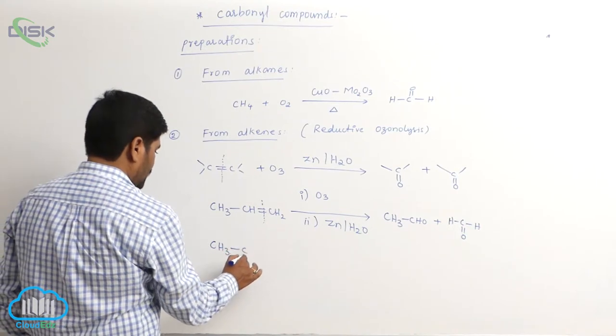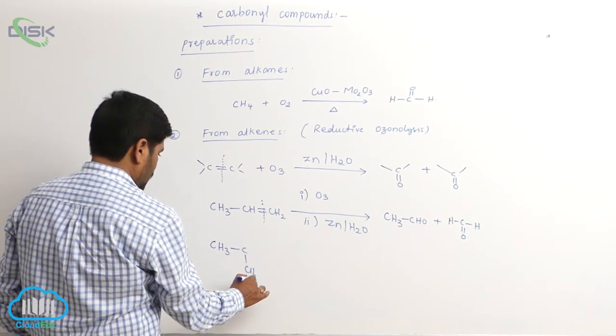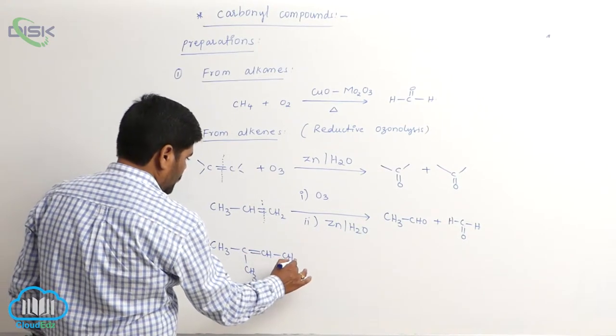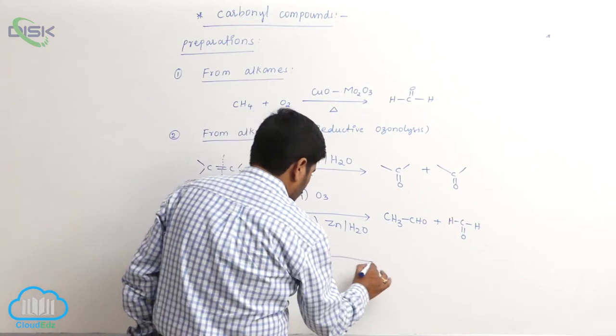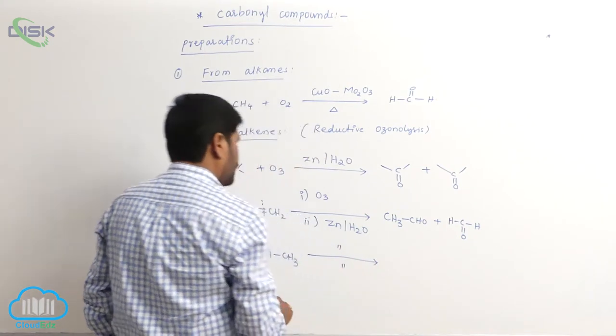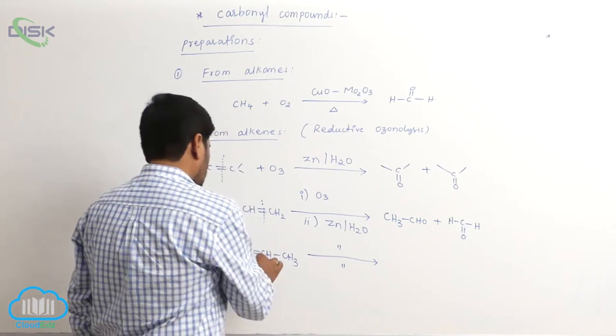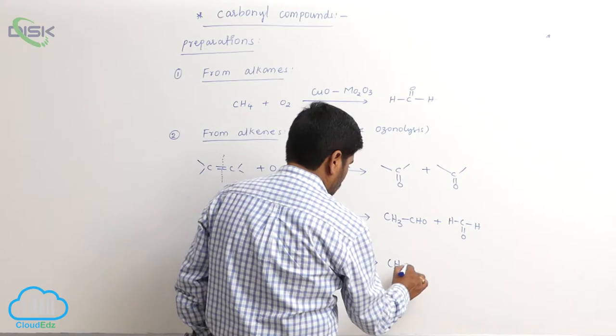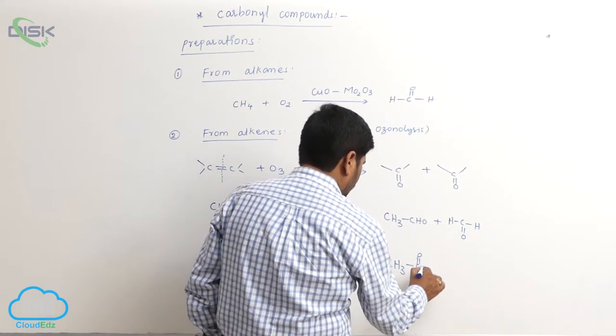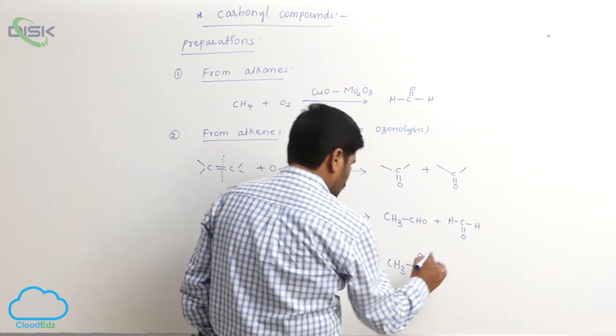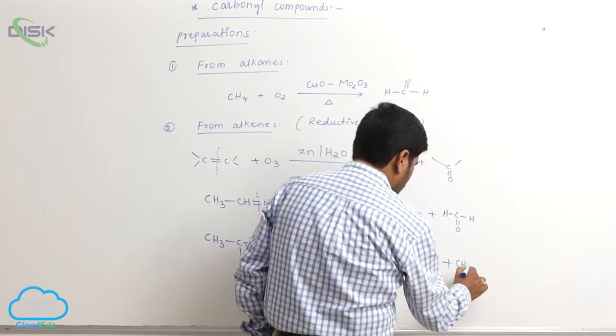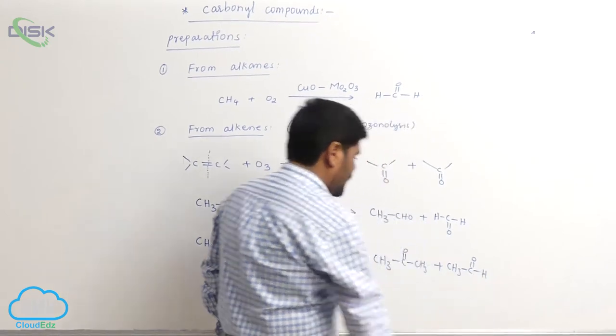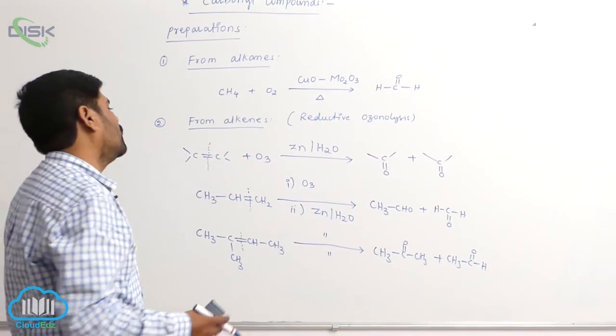Another example: CH3 methyl group double bond CH methyl group. With O3 in the presence of zinc and water, breakage takes place, forming one mole of acetone and one mole of acetaldehyde.